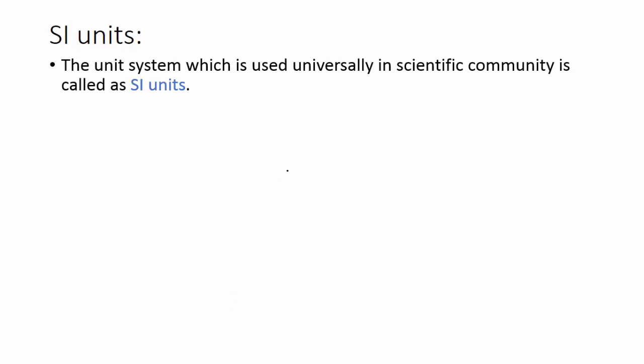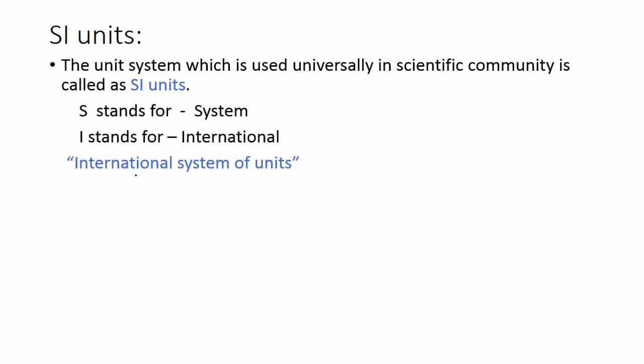What are SI units? The unit system which is used universally in scientific community is called SI units. S stands for system, I stands for international. So the full form of SI unit is international system of units.